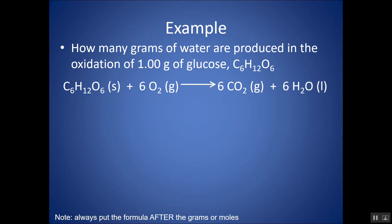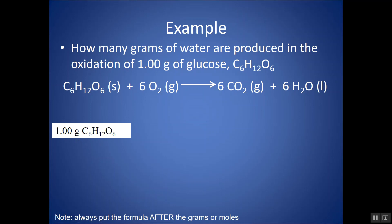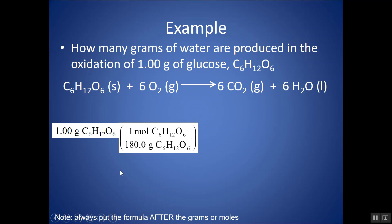Try this example: Starting with 1 gram of C₆H₁₂O₆ (glucose), I want to change it into grams of water. This chemical reaction relates glucose to water, but I have to be in moles to use those coefficients, and I'm not in moles to start with. So I've got to change grams of glucose into moles of glucose first using its molar mass. There are 6 carbons (×12), 12 hydrogens (×1), and 6 oxygens (×16) — that gives a molar mass of 180 grams per mole.